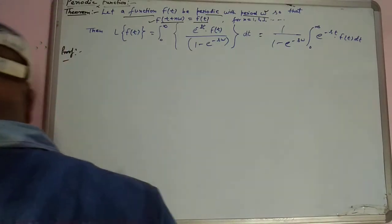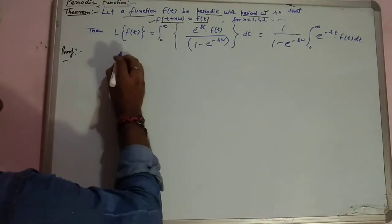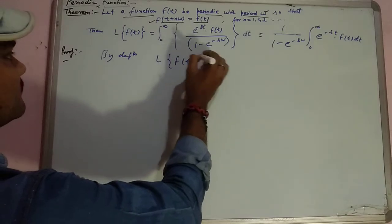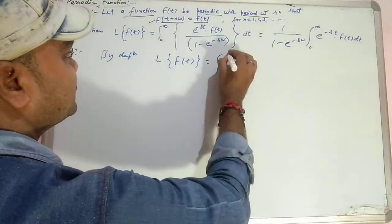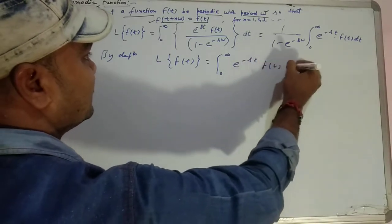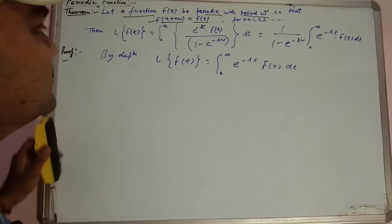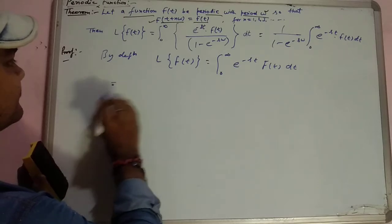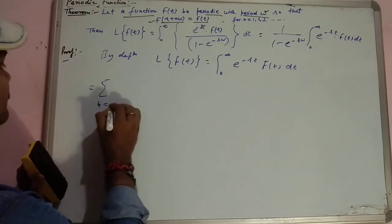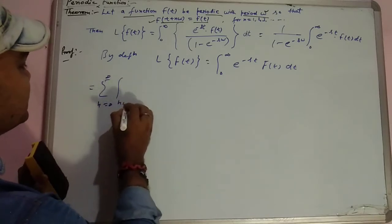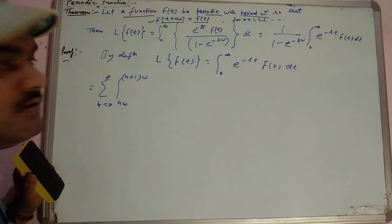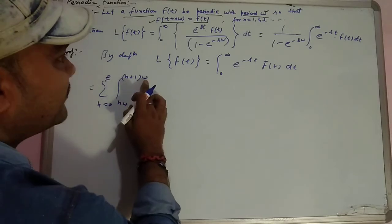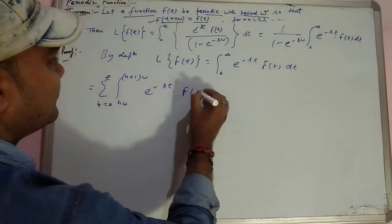To prove this, by definition: L{f(t)} = ∫₀^∞ e^(−st)·f(t) dt. We can write this as Σ(n=0 to ∞) ∫_{nω}^{(n+1)ω} e^(−st)·f(t) dt, because f(t) is periodic with ω, so we change the limit 0 to ∞ to n·ω to (n+1)·ω. Nothing actually changes — it's just a new way to write it for periodic functions.